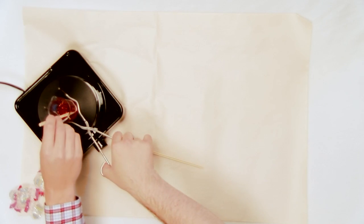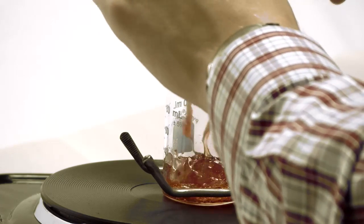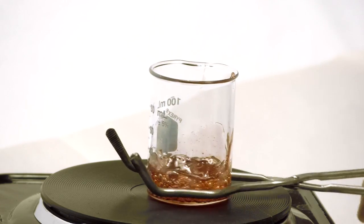Stir the Jolly Ranchers while heating for approximately 10 to 15 minutes. The Jolly Ranchers will begin to melt into a more fluid form.